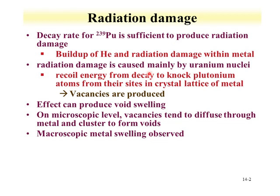The recoil of the uranium daughter is the prime generator of radiation damage effects. This is due to the recoil energy — if you remember from the Q value, we can calculate how much energy goes into the alpha decay and how much goes into the uranium daughter. It's on the order of keV, but that's certainly enough energy to knock atoms off their lattice sites. Vacancies are produced, and the net effect from both the helium and this radiation damage is void swelling. On the microscopic level, vacancies diffuse together and cluster, and the metal swells.